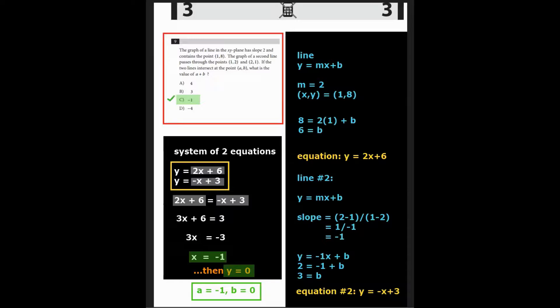For the second line, we have two floating points on the map. We can compute the slope as two minus one over one minus two, which is a slope of negative one. Then we have y equals negative one x plus b. Plugging in the first point, one comma two, we have two equals negative one times one plus b, giving us a b value of three. So the equation of line number two is y equals negative x plus three.